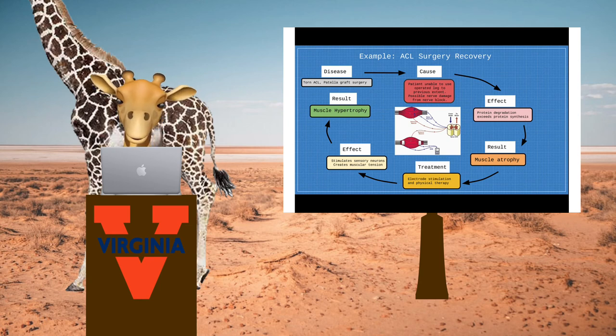The effect is protein degradation exceeding protein synthesis so that upregulation of ubiquitin proteasome system and autophagy lysosome system. As previously discussed, this results in muscle atrophy. In this case, specifically the quadricep muscle will experience extreme atrophy.